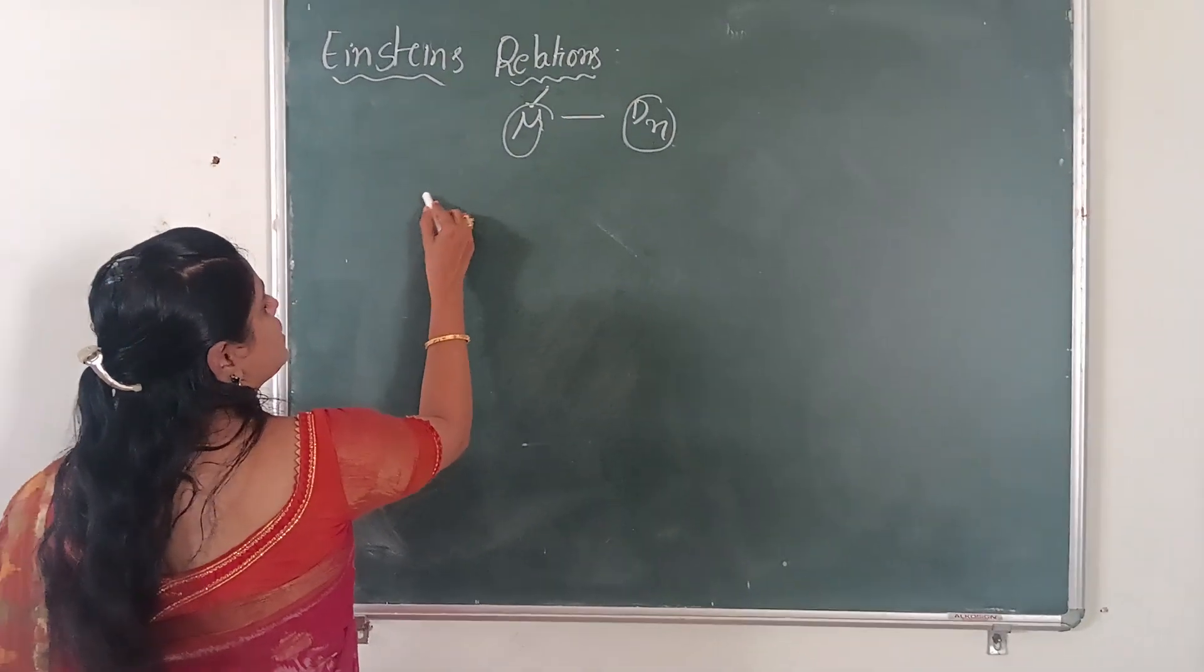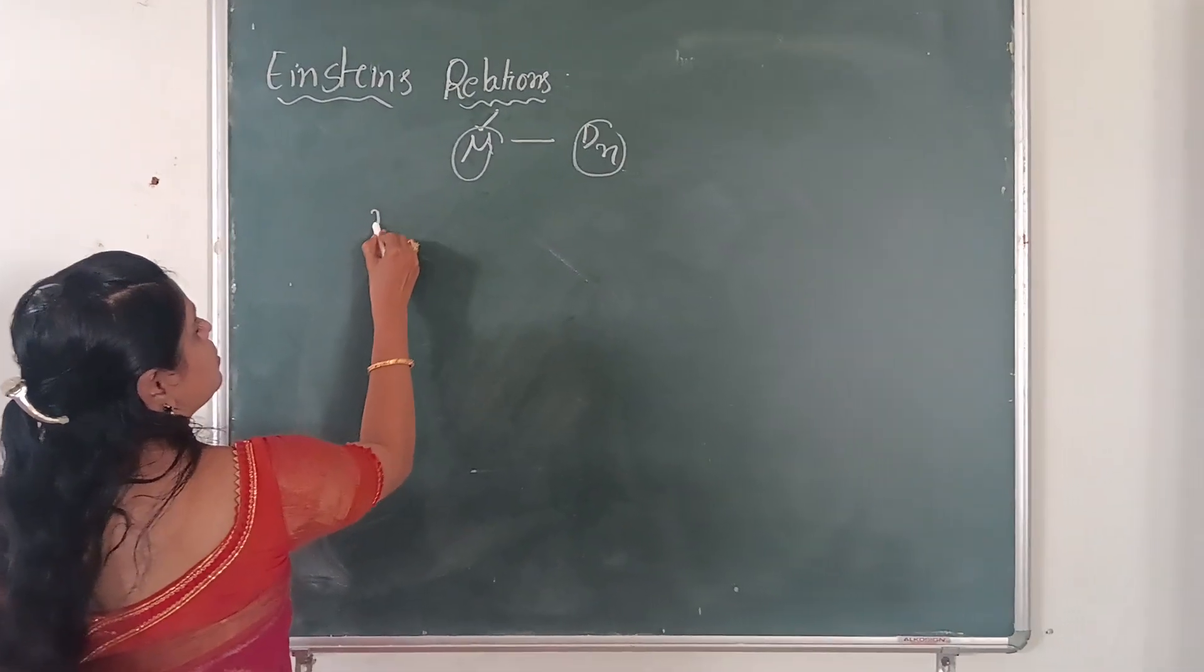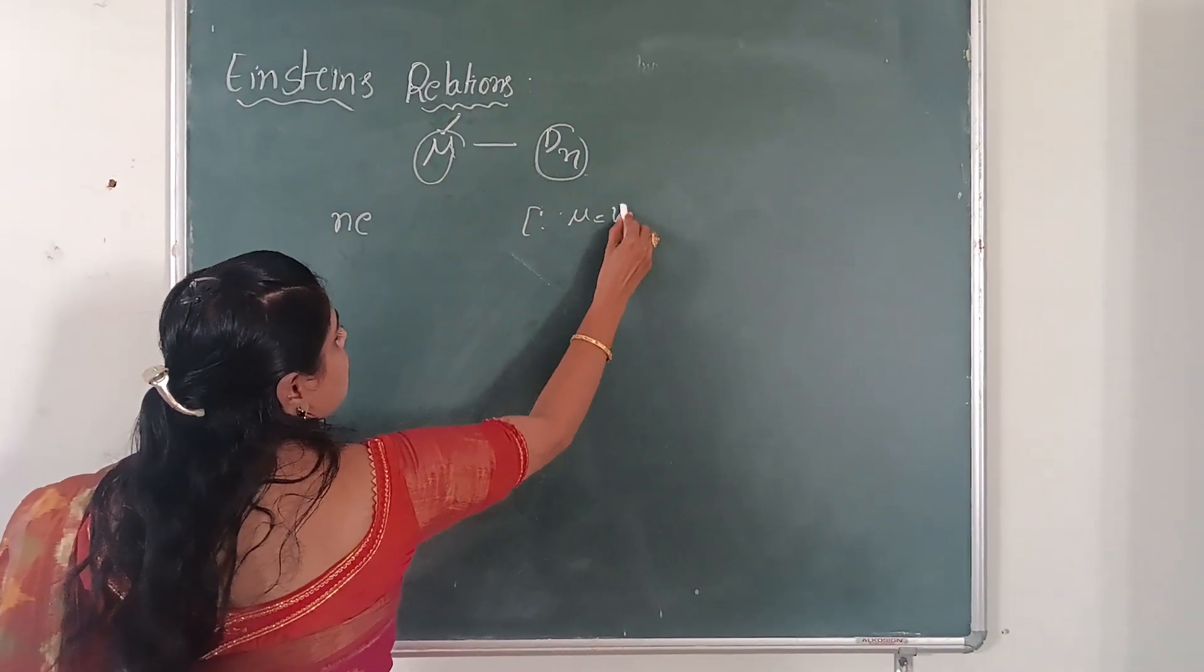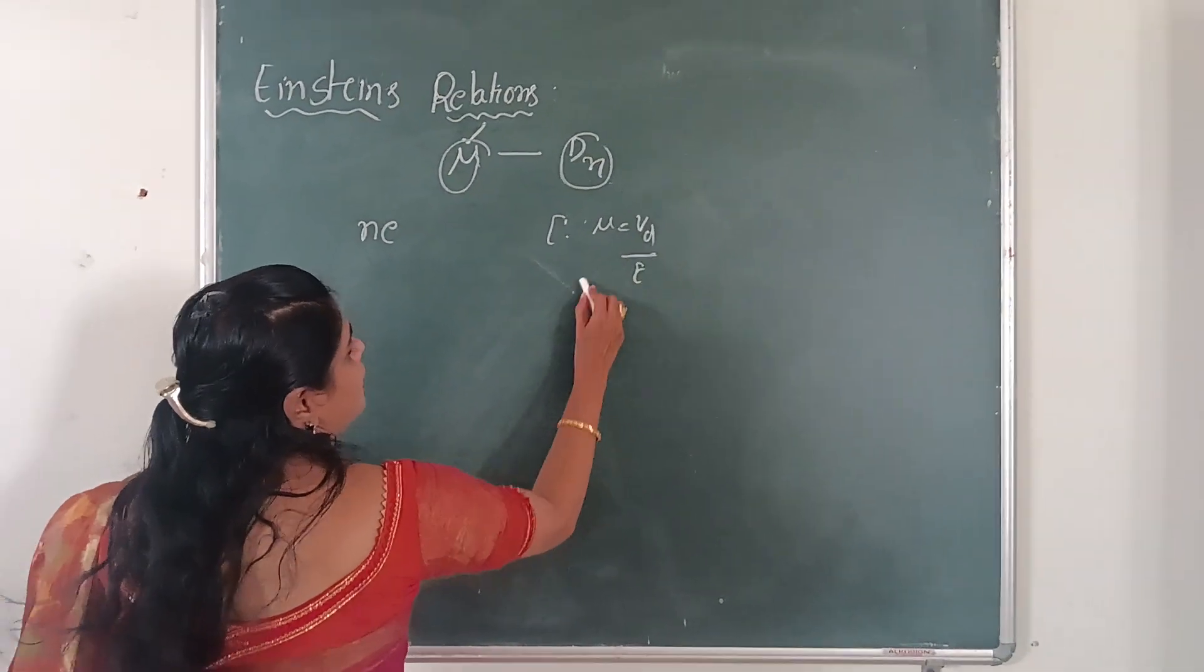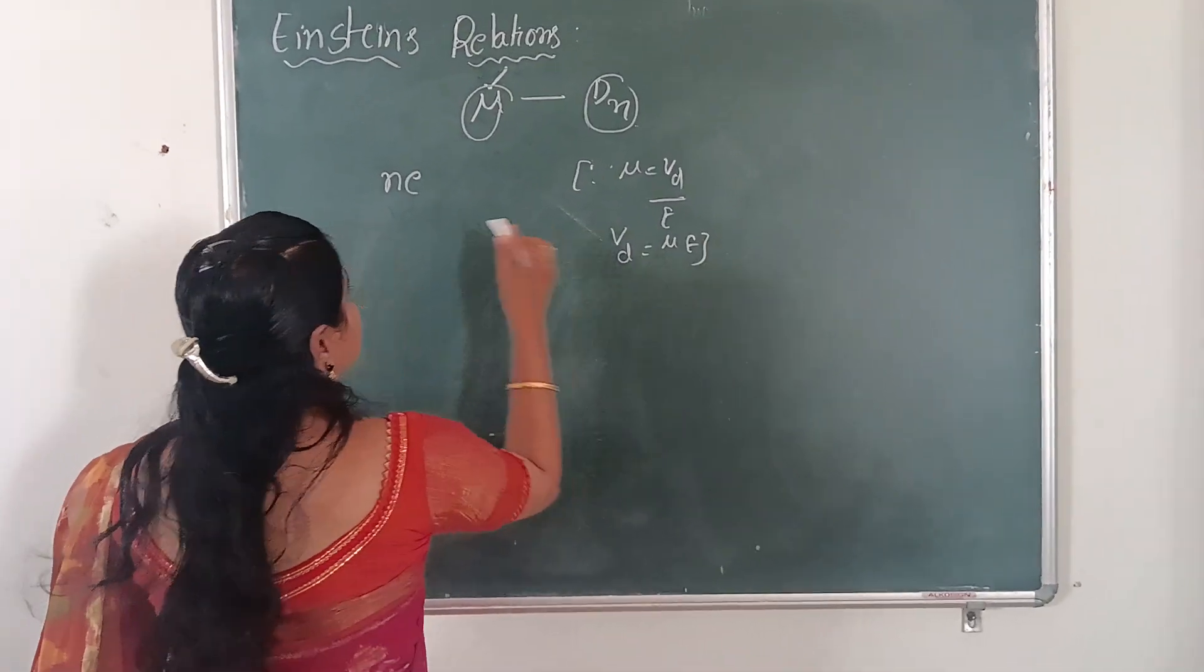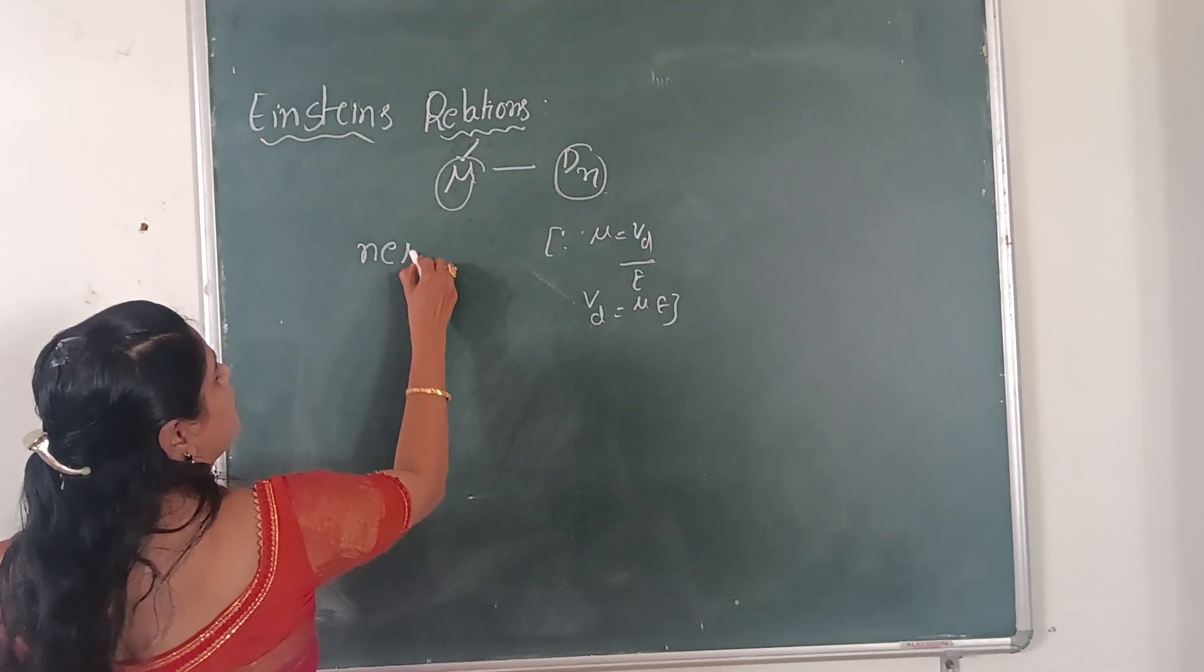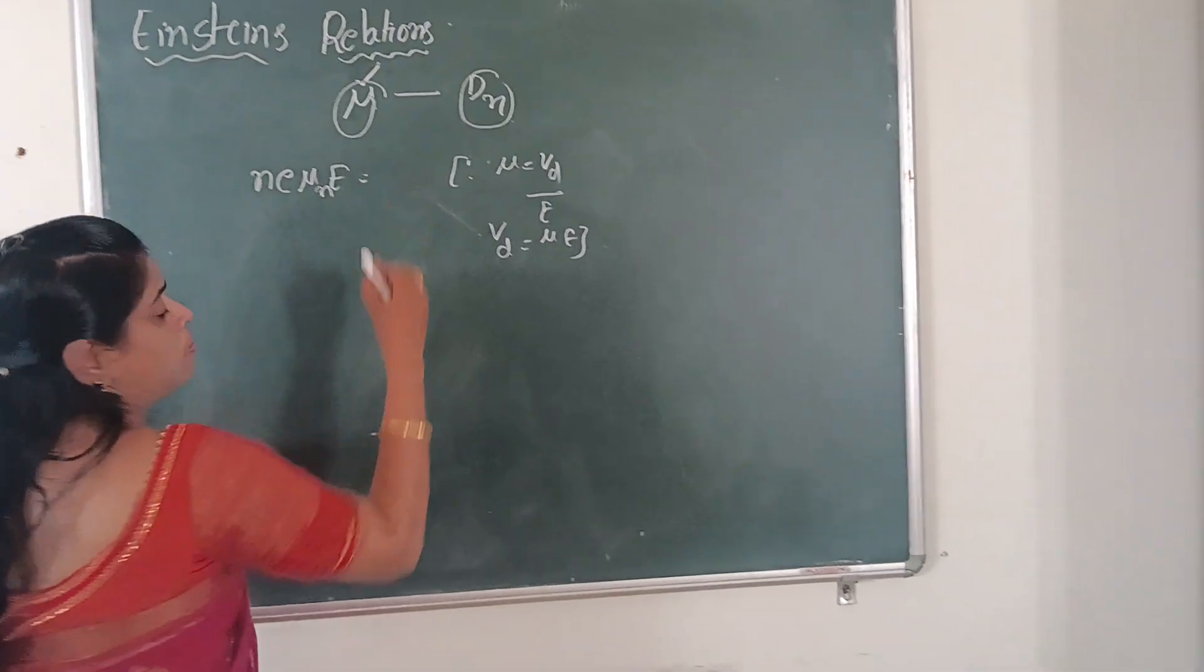So here, what is the current density? J equals to NeV. Since mu equals to VD by capital E, VD equals to mu capital E. Therefore, J equals to NeV, so mu n into capital E.